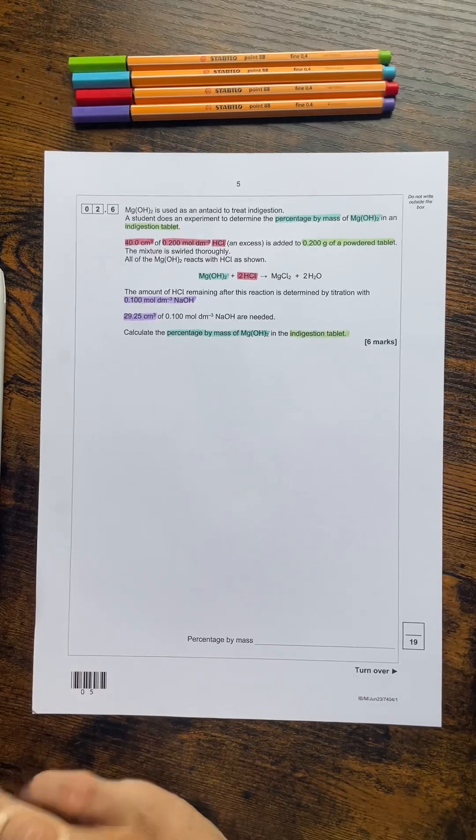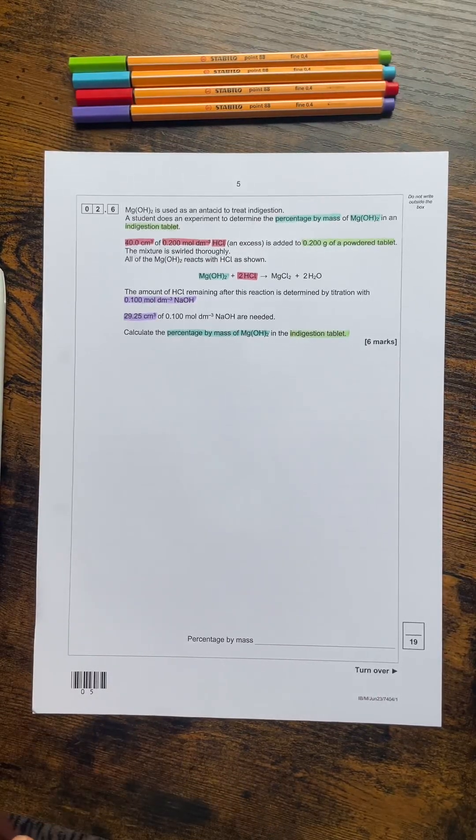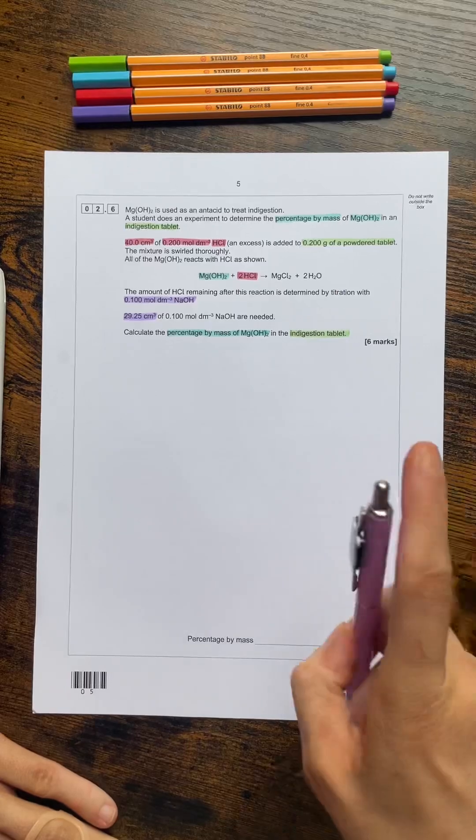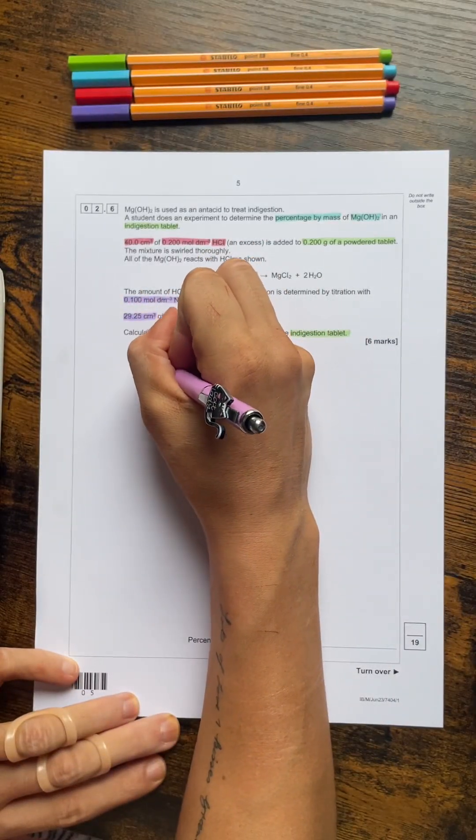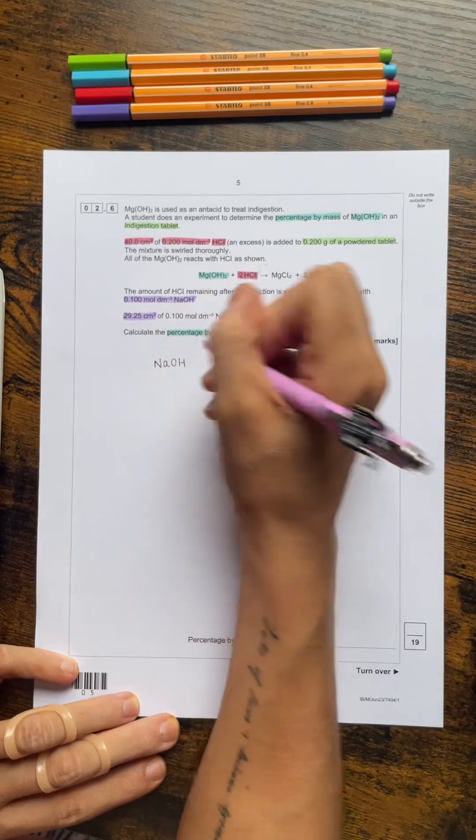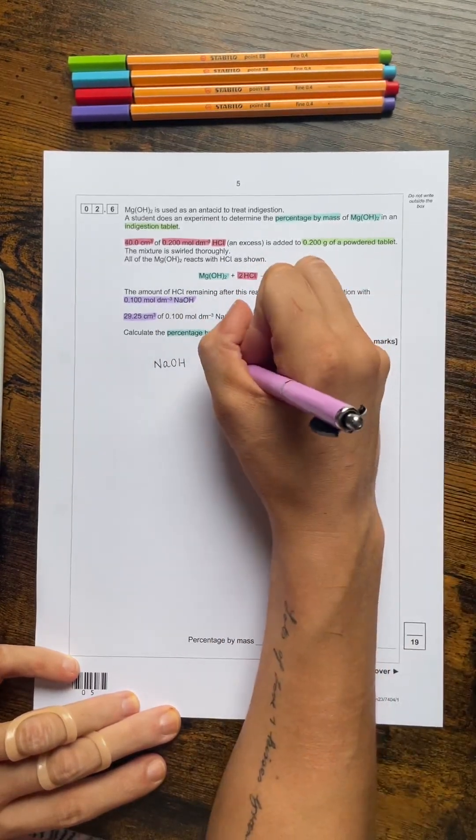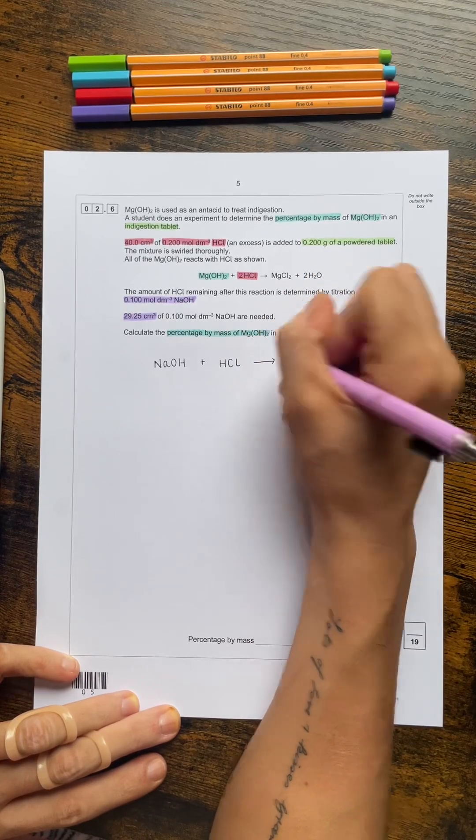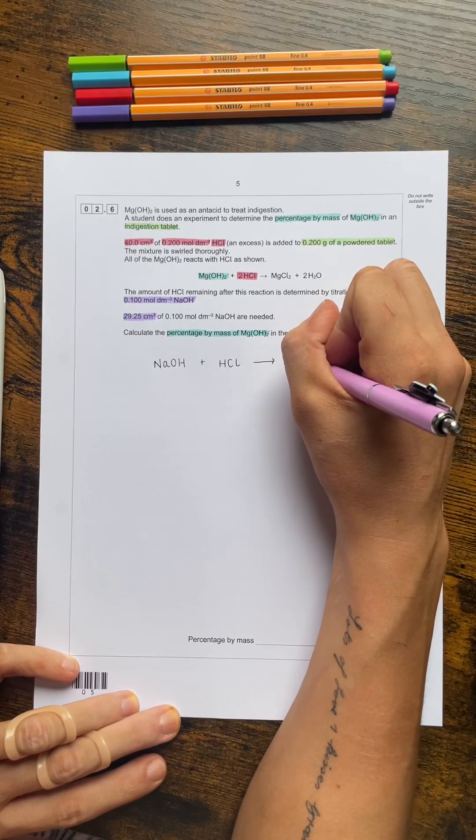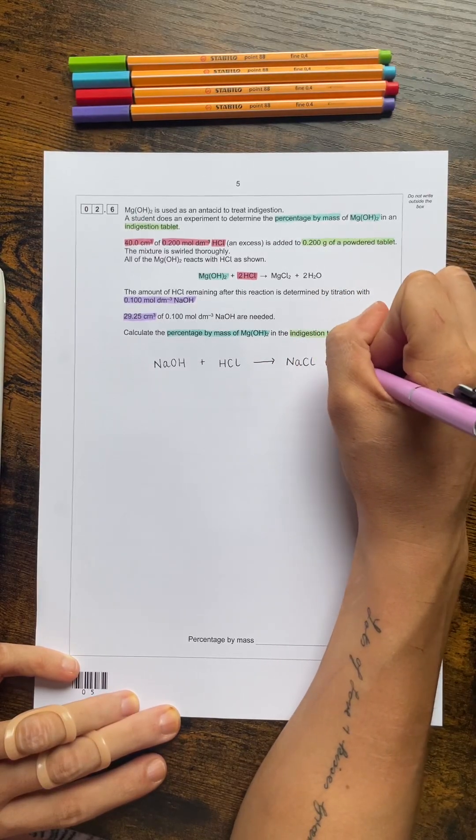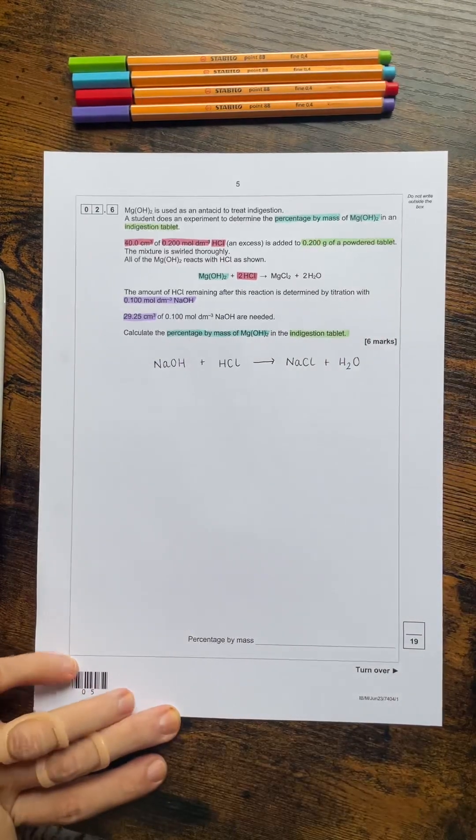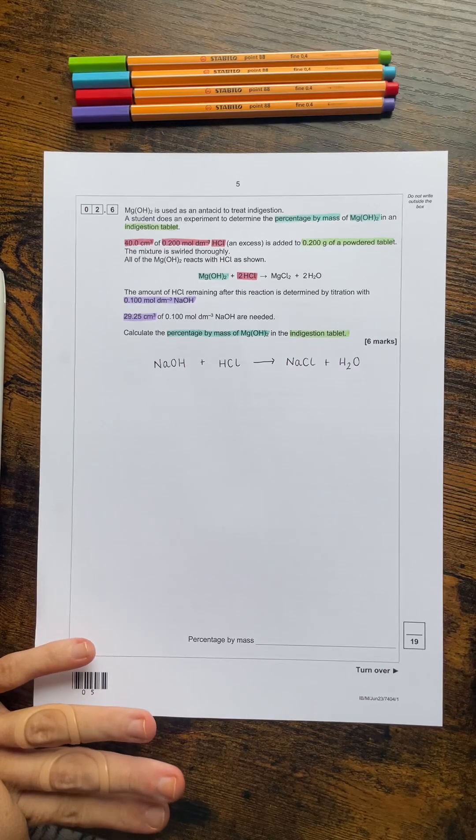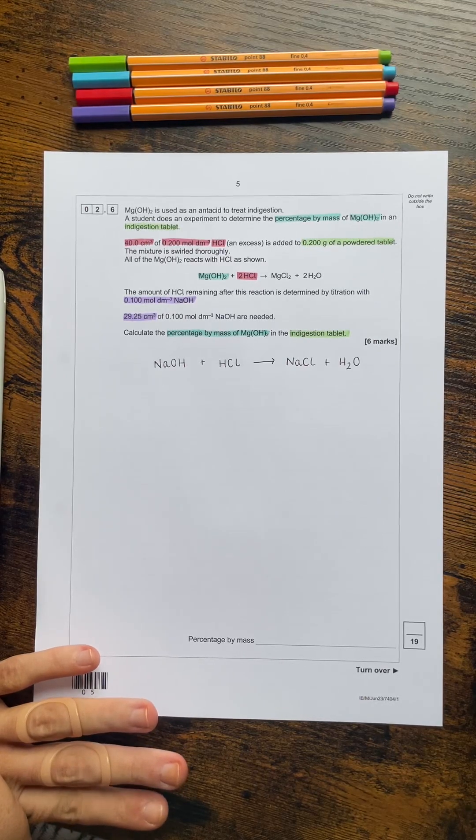So we don't have an equation to show how hydrochloric acid and sodium hydroxide react together. Now hopefully it's not too difficult for us to write one of those ourselves. Sodium hydroxide is our alkali, hydrochloric acid is our acid, that will make a salt plus water. The salt is going to be sodium chloride and water is our second product there. That is already balanced which is nice. So the reacting ratio of sodium hydroxide to hydrochloric acid in the second reaction is 1 to 1.